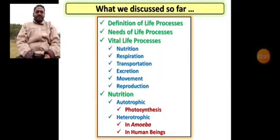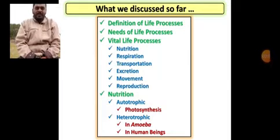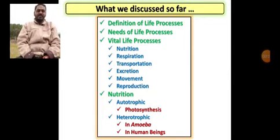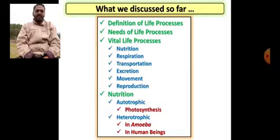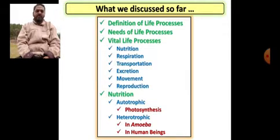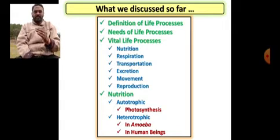Dear children, so what we have discussed so far: we have learned about life processes, different life processes, and nutrition — the first life process — in which two types, autotrophic and heterotrophic, is what we have completed in two different classes.